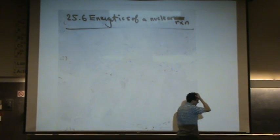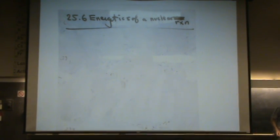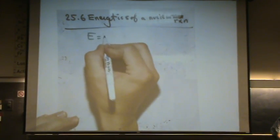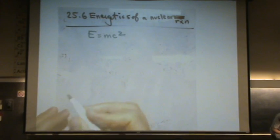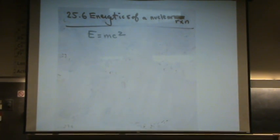Energetics of a nuclear reaction. And this is where that famous equation E equals MC squared comes into play. A very famous one that if you see a movie and they have crazy formulas written on the board, this is one of them.